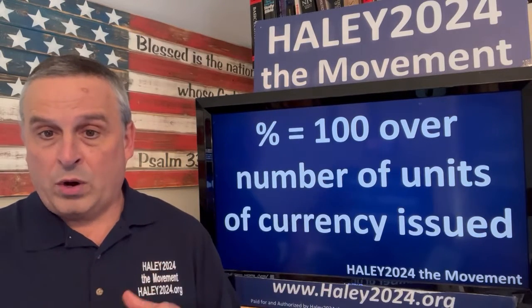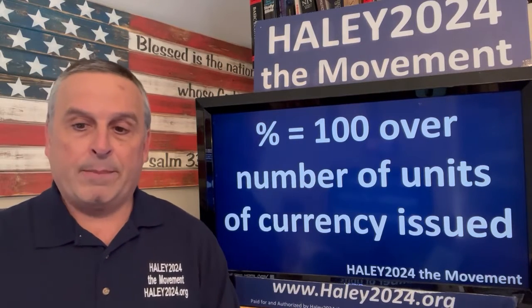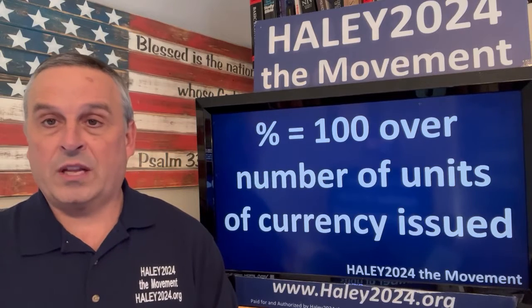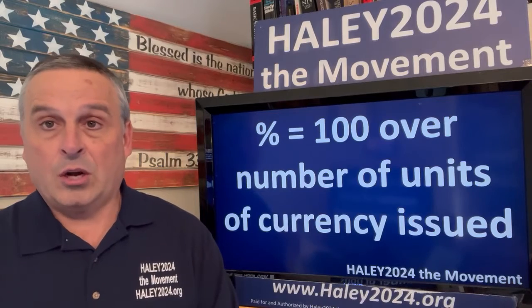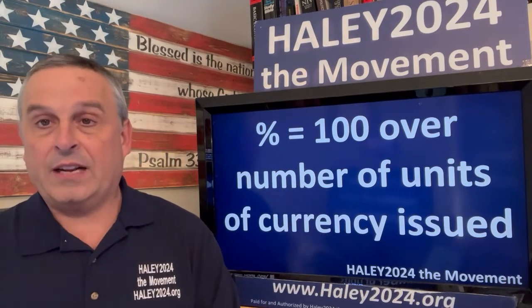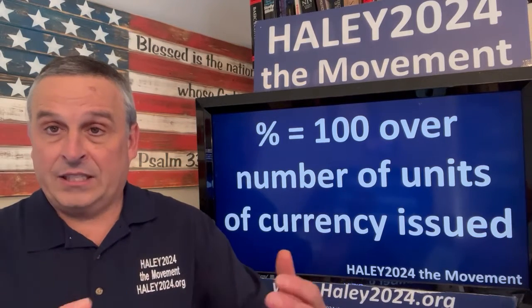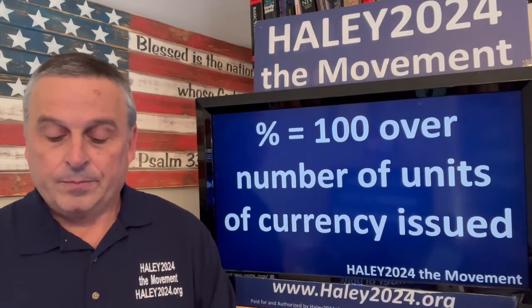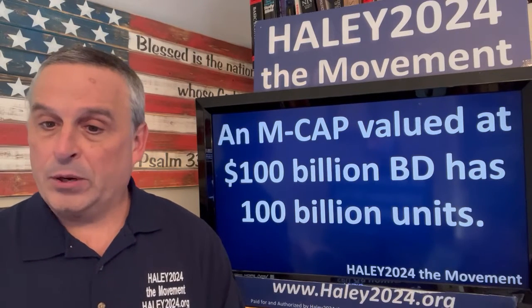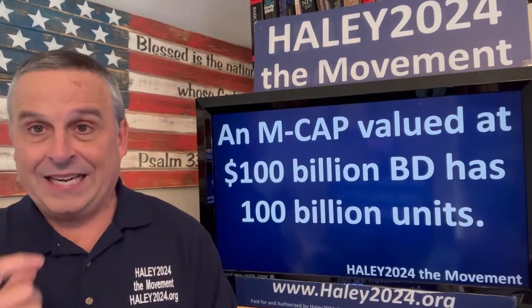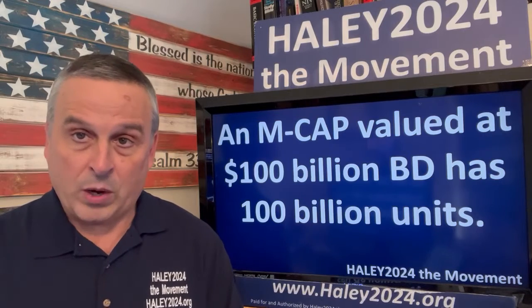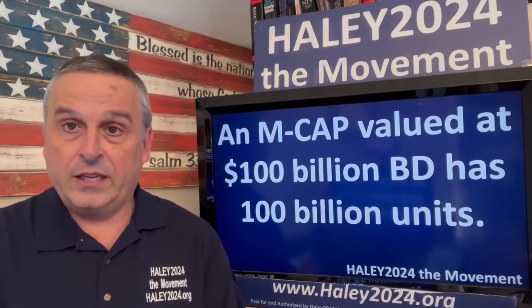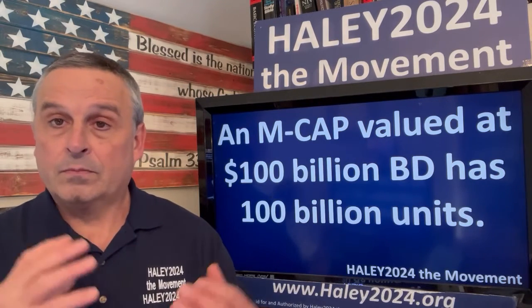The unit of currency is worth a percentage of the MCAP — specifically, 100 divided by the number of units of currency issued. So if you have $100,000 worth of assets, you have 100,000 units of currency, and your percentage of that MCAP is 1 over 100,000. For example, an MCAP valued at $100 billion BD — the backed dollar, which we'll discuss in another video — has 100 million units, so each unit is worth 1 over 100 billion of the assets in the storeroom.